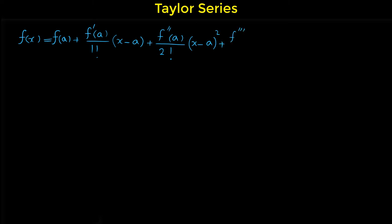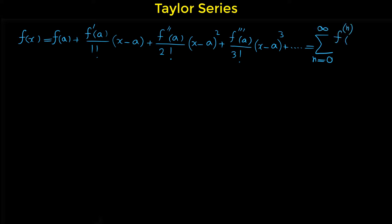The next term is f triple prime of a over 3 factorial times x minus a to the power of 3, and this pattern continues. We can rewrite this in sigma form as: sigma from n equals 0 to infinity of the nth derivative of f at point a over n factorial times x minus a to the power of n.